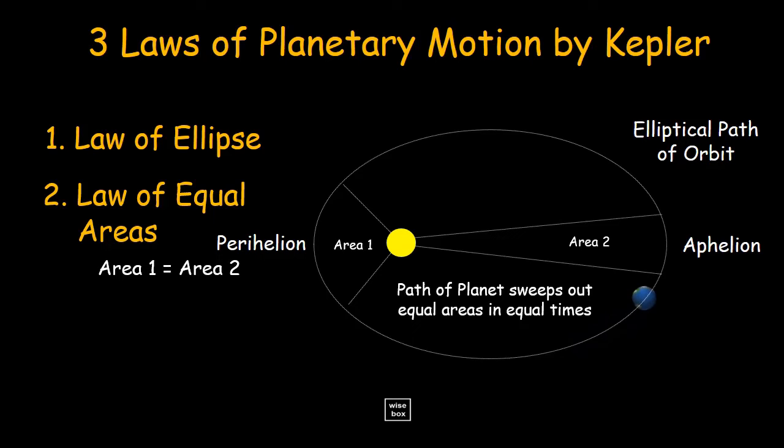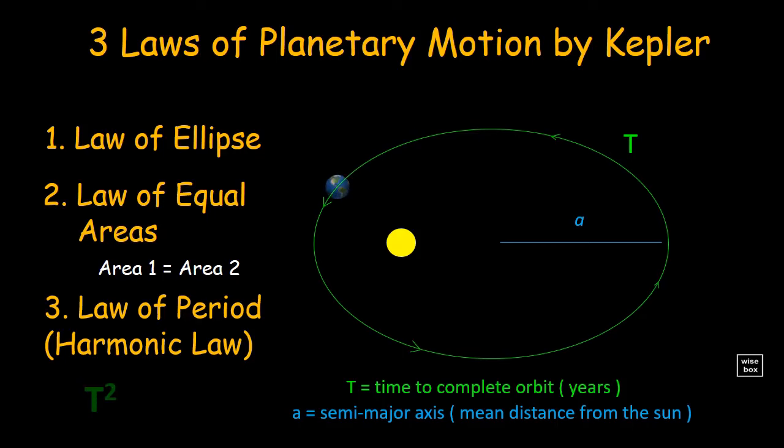Third is the law of period or harmonic law. The square of the period of revolution of a planet around the Sun is proportional to the cube of the average distance of the planet from the Sun.